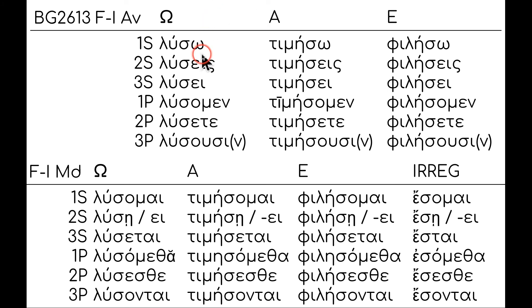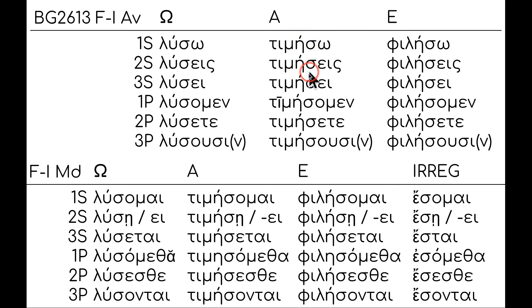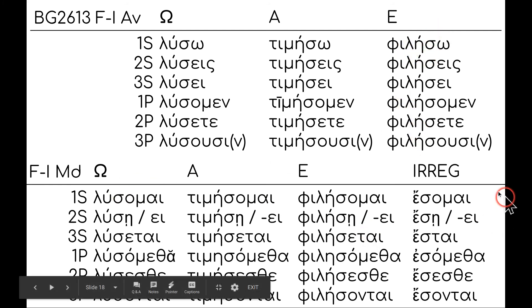Now the future — we've talked about this already. A sigma is added to the stem. For alpha contracts it becomes lengthened; epsilon contracts also get lengthened. You do need to know about the irregular future forms.